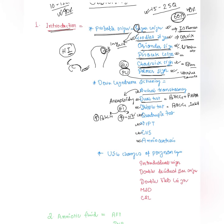Palmer sign: C for contraction, that is uterine contraction, also known as Braxton Hicks contraction. Pisacek sign is like a tower divided to one side — it represents unequal growth of the uterus. Osiander sign is due to uterine artery lateral vaginal fornix pulsation. These probable signs are very, very important for this exam.